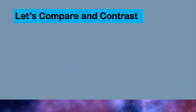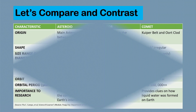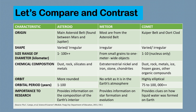Since we are done discussing those different space rocks, try to compare and contrast asteroids, meteors, and comets. I would like you to look at this table which shows the differences between an asteroid, meteor, and comet as to their origin, shape, size, range of diameter, chemical composition, orbit, orbital period, and importance to research. Kindly pause this video to read and understand what's on the table, or take a screenshot for reviewing later on.